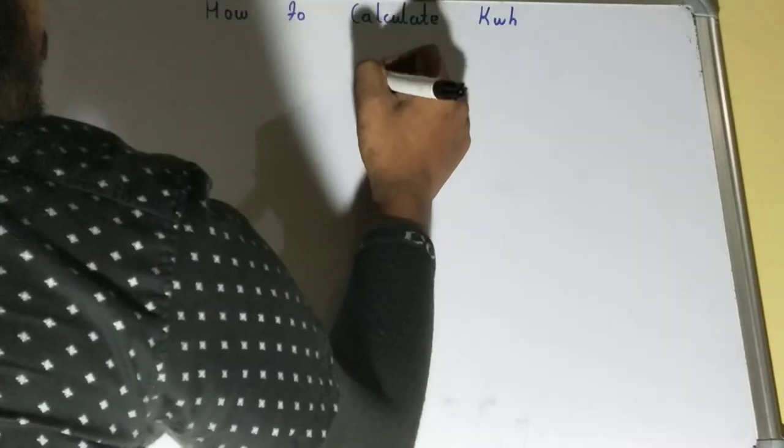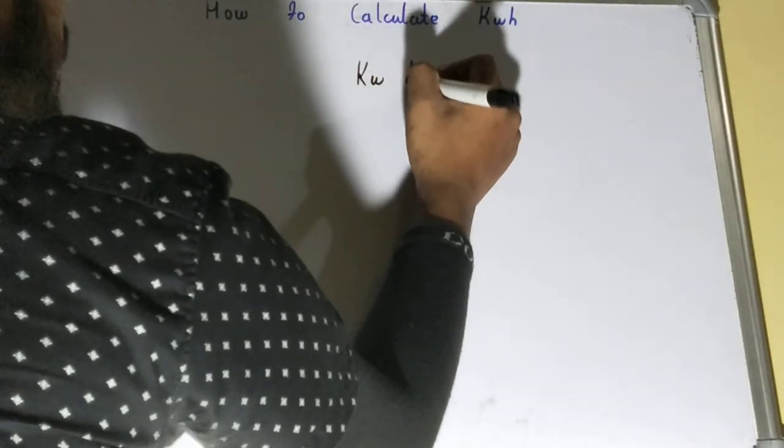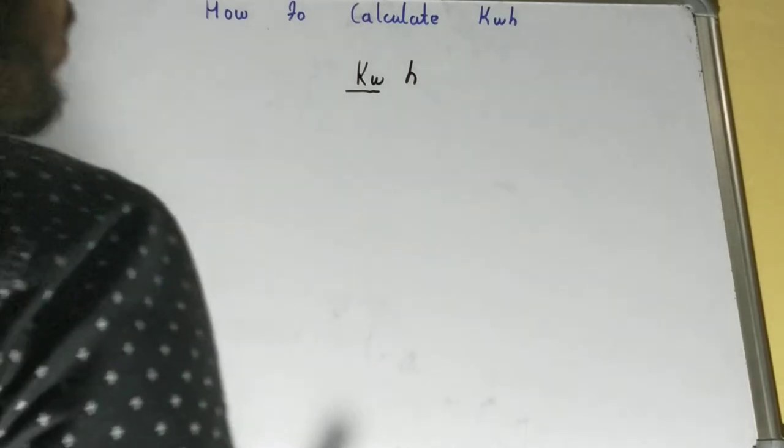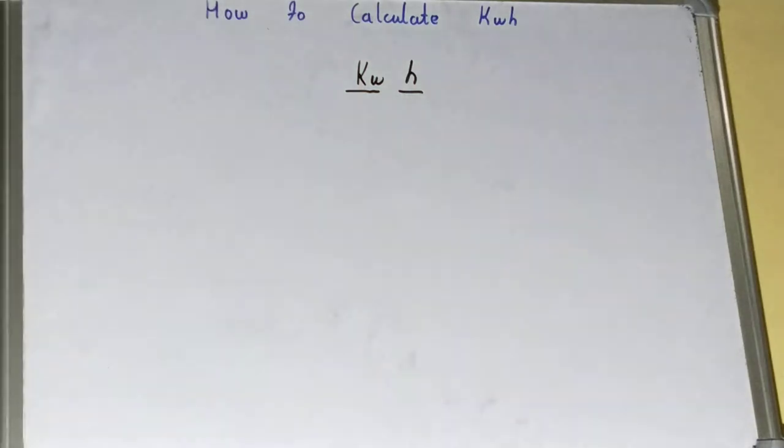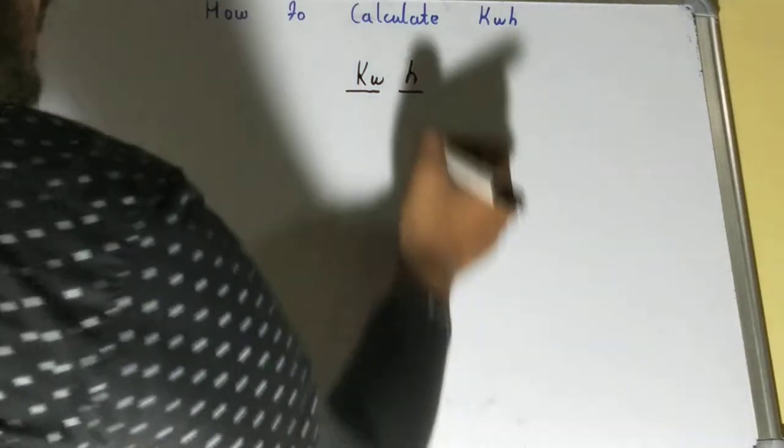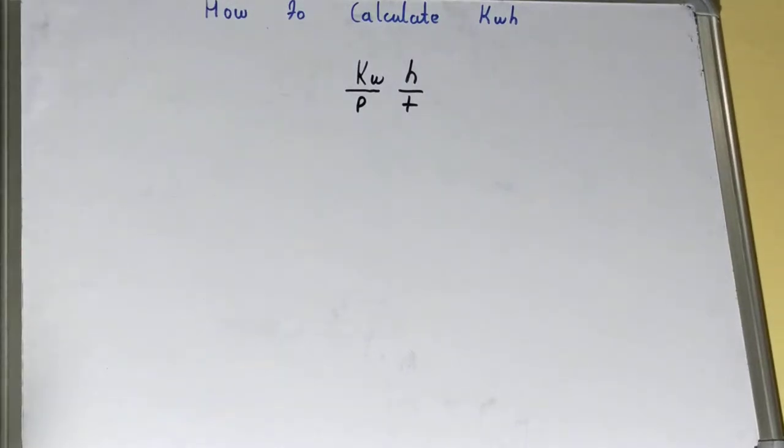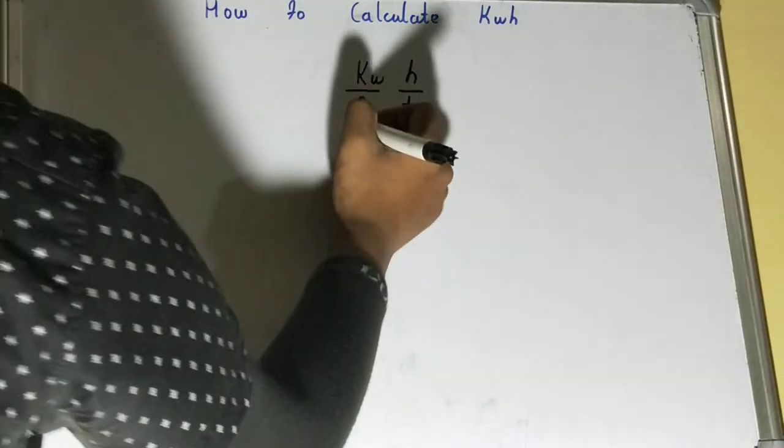So your kilowatt-hour is basically including two things. First is kilowatt, that is basically the power, given to you in terms of how many kilowatts are there. And second thing is basically the time that is depicted in hours.